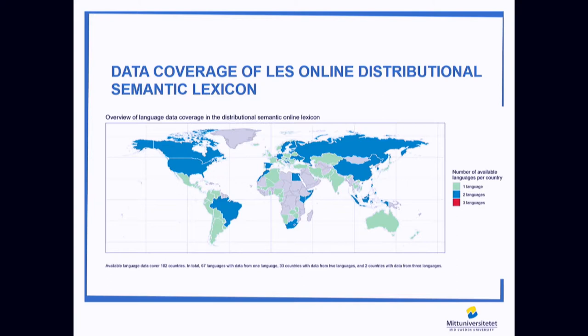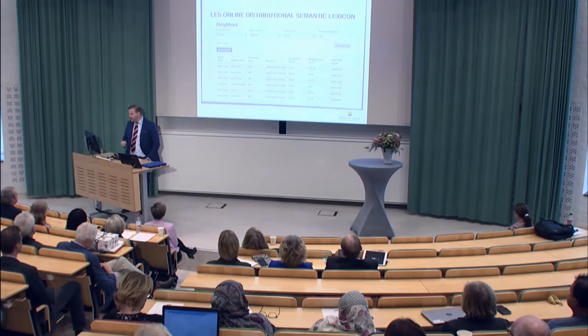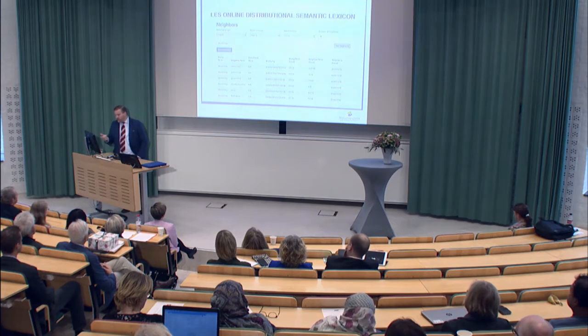In Finland we have Finnish and Finnish-Swedish. With this data we have constructed an API within the project, which we're going to make public this autumn. You can basically select the language you're interested in, the country, and the news source — editorial or social media.